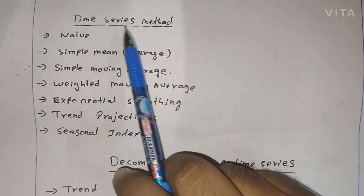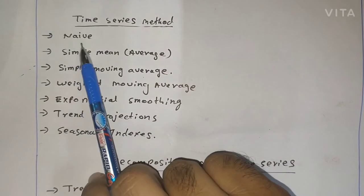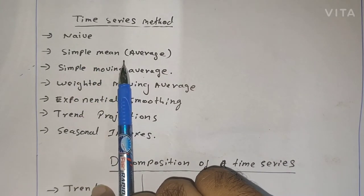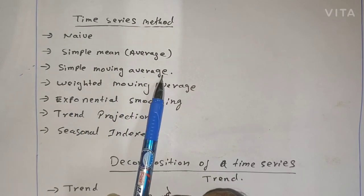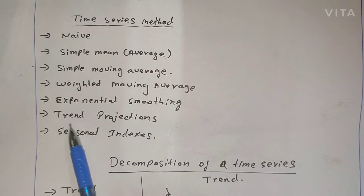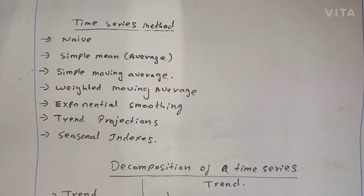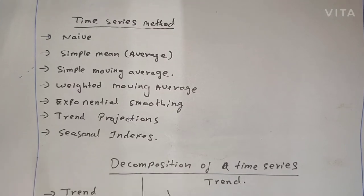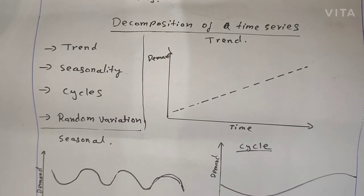To solve a time series problem, there are different types of methods. The first is the naive method. Second is simple mean average — you find the mean of the demand and try to predict the forecast. Third is simple moving average. Fourth is weighted moving average. Fifth is exponential smoothing. Then there is trend projection, seasonal indexes — for seasonal products like umbrellas which sell mostly in the rainy season.